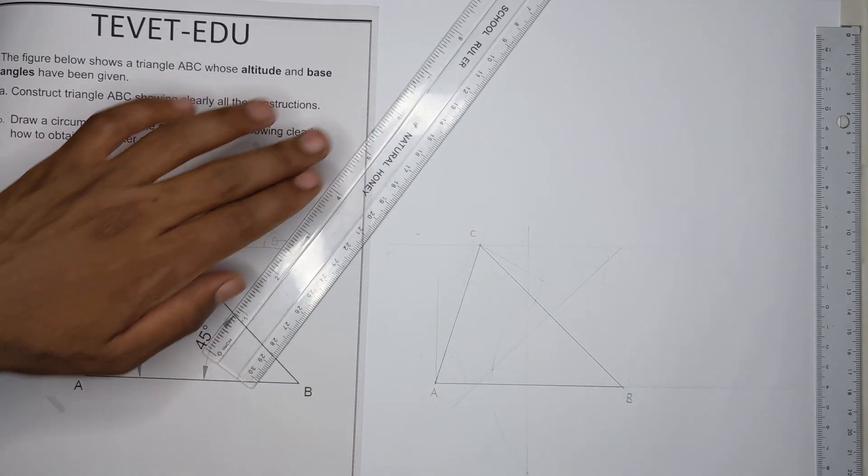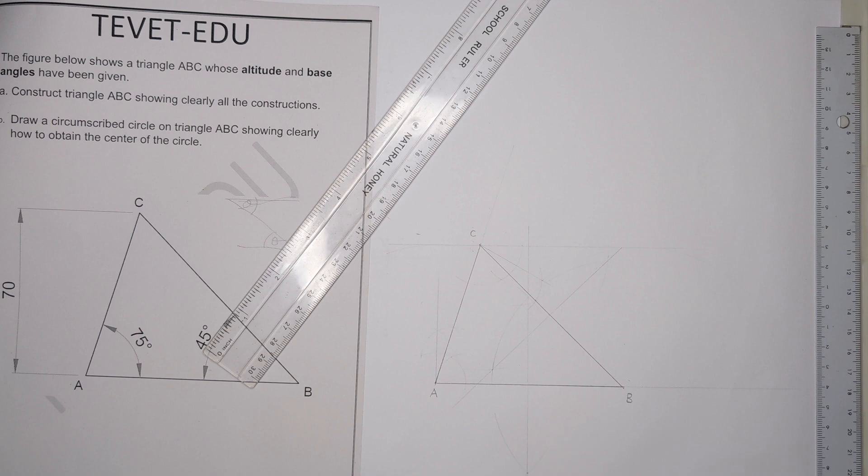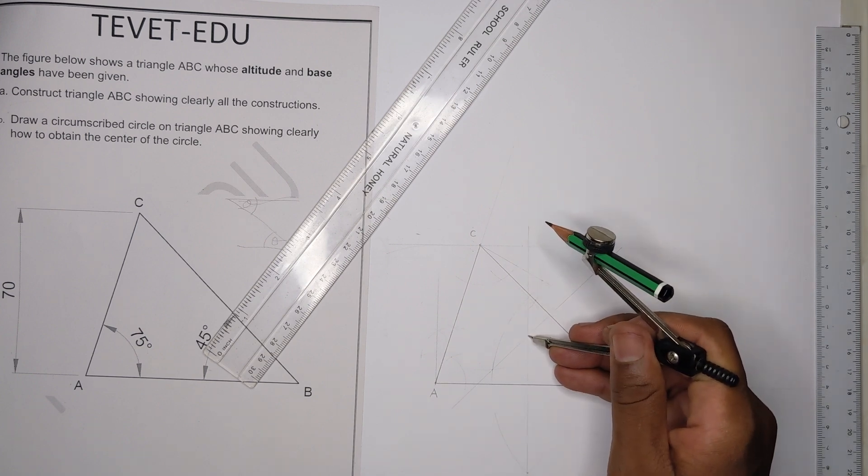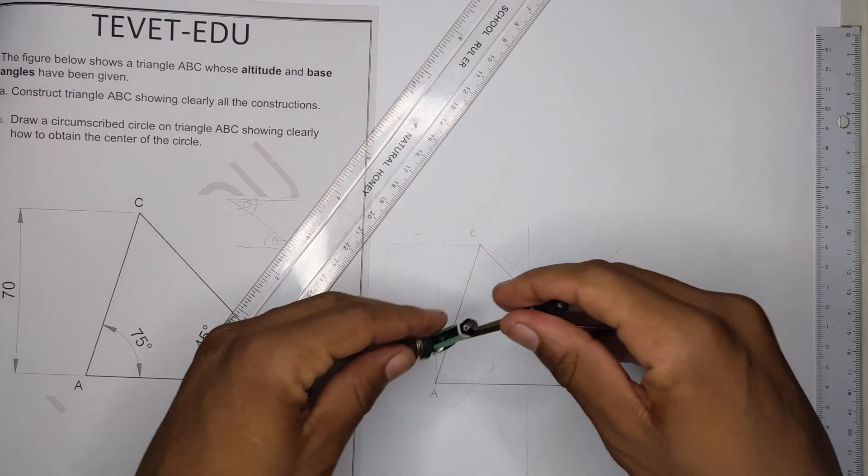So even here I'll draw. You can get your bisector like that, and then where the bisectors are meeting, which is this point here, that is the circumcenter.